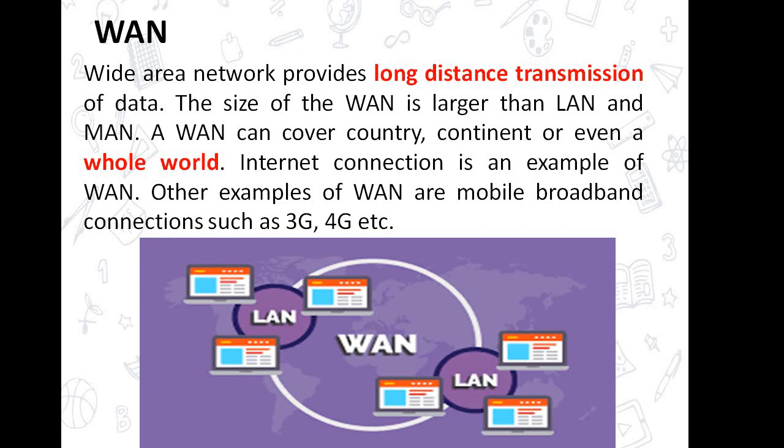WAN, or Wide Area Network, is a long-distance data transmission network. It is a huge network that is a collection of a large number of LANs and MANs connected together, covering countries, continents, and even the whole world. Your 3G and 4G mobile broadband connections are examples of WAN.